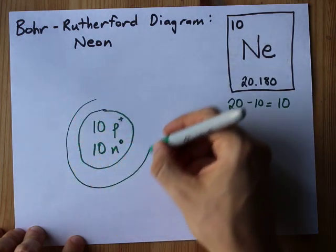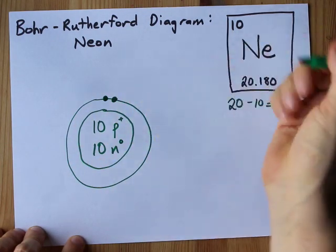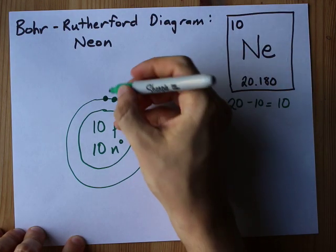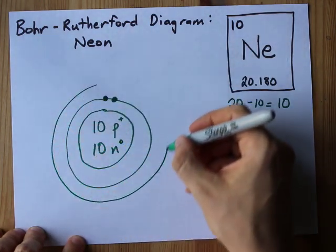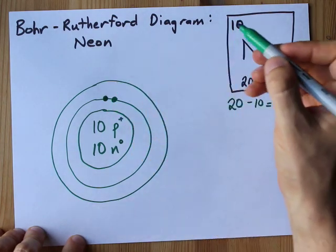The first shell can hold up to 2. 1, 2. First shell's done. Second shell can hold up to 8. And I'm actually going to max that out because 2 plus that extra 8 is what's going to give me 10.